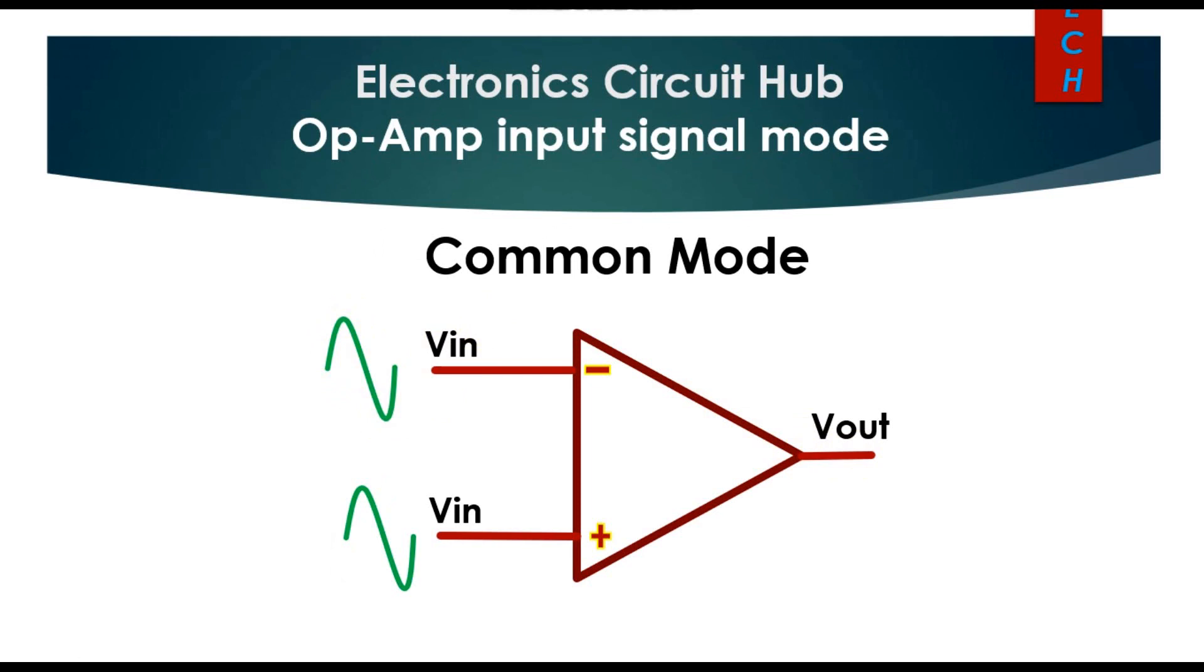In common mode configuration, the input signal is applied at both input terminals of an operational amplifier, but it is in the same phase, same frequency with same amplitude. Because of that, the output of this configuration is zero because the input signals are canceling each other. This action is also called common mode rejection ratio.